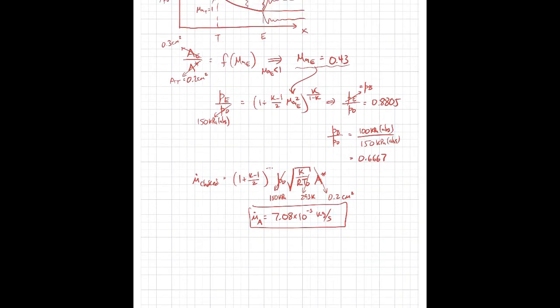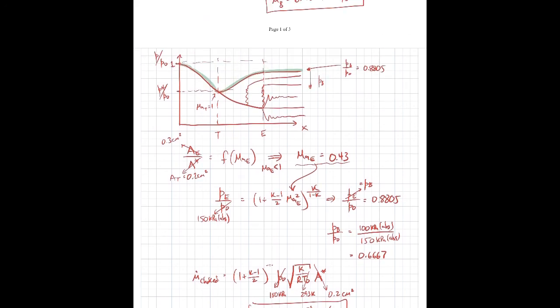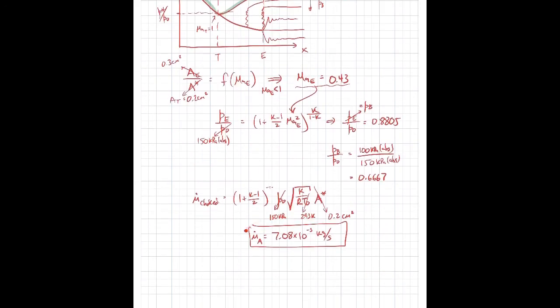Comparing the two: hole A, the converging-diverging nozzle, gives about 7.1×10⁻³ kg/s, while hole B, the converging nozzle, gives about 6.8×10⁻³ kg/s. The mass flow rate is higher for the converging-diverging case because that flow is choked while hole B's flow is not. In compressible flow, the orientation of the hole actually makes a difference — an interesting result.